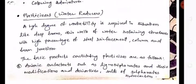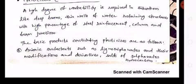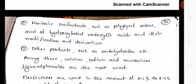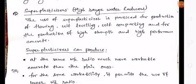Plasticizers or water reducers: a high degree of workability is required in situations like deep beams, thin walls of water-retaining structures, high percentages of steel reinforcement, and column-beam junctions. The basic products constituting plasticizers are: anionic surfactants such as lignosulfonates and their derivatives, salts of sulfonated hydrocarbons; non-ionic surfactants such as oligo esters, hydroxylated carboxylic acids and their derivatives; and other products such as carbohydrates. Plasticizers are used in the amount of 0.1 to 0.4 percent by weight of cement.